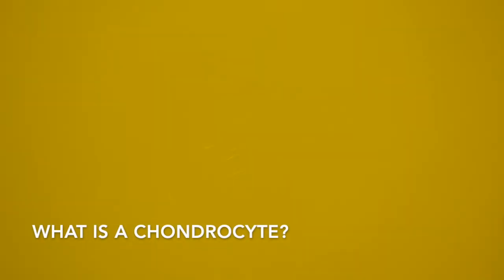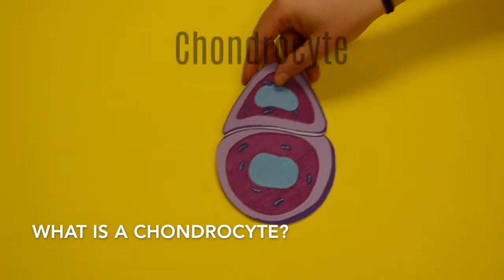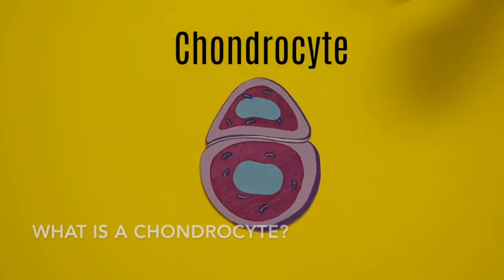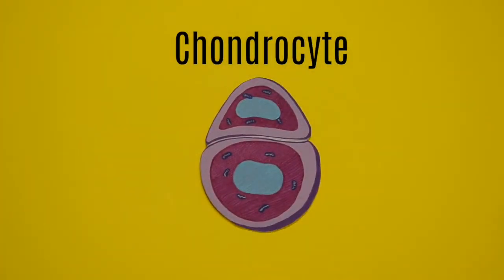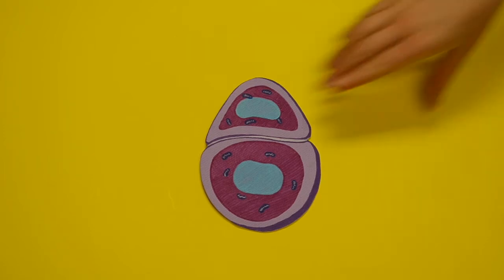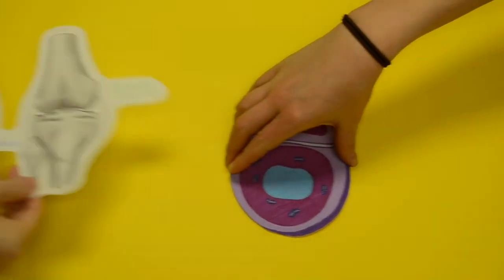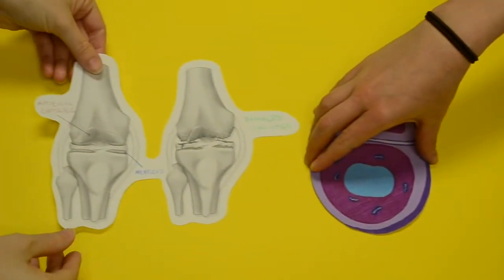What is a chondrocyte? First we must look at where a chondrocyte is found and where it comes from. A chondrocyte is a cell located in cartilage.